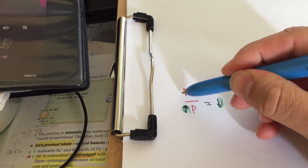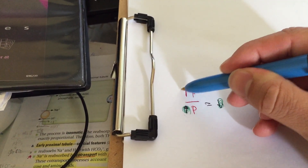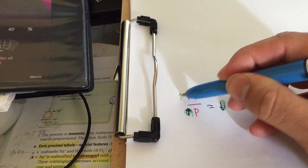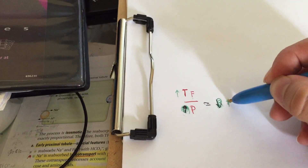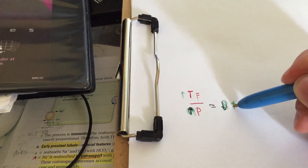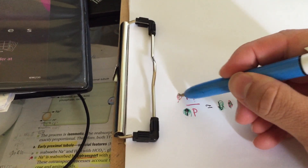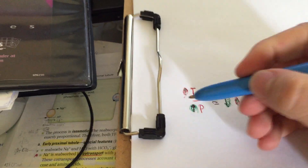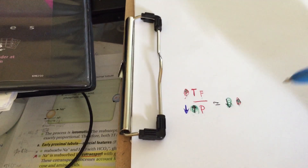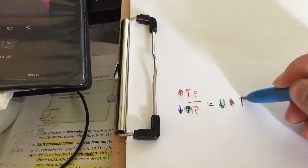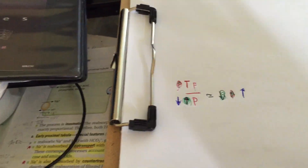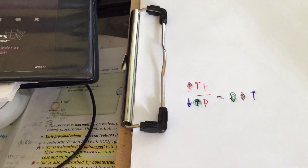If we increase the tubular fluid concentration, the whole ratio is going to go up. Conversely, if we decrease plasma concentration, the whole ratio is going to go up, because it is inversely proportional. So with that in mind, we're going to go ahead and understand this graph.